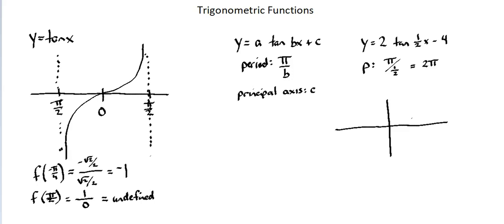Since my period is 2 pi, instead of a range of negative pi over 2 to pi over 2, my range is going to be for one complete period, negative pi to positive pi.